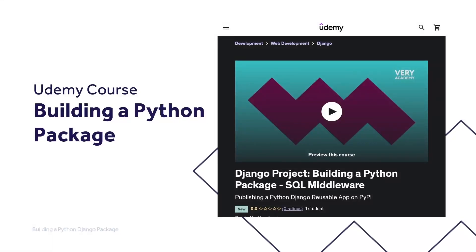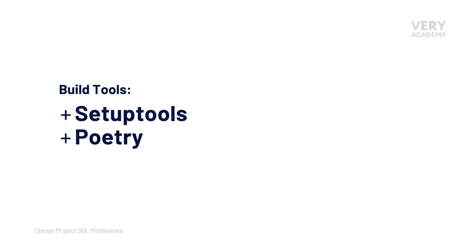This tutorial is part of our building a Python package course, where we learn how to build, test, and automate deployment of a Python Django middleware package to the Python Package Index. You can watch the entire course uninterrupted, ad-free, and access updated tutorial source code and other resources from our Udemy course. Alternatively, you can access the course via our YouTube playlist — links can be found in the video description. We're now ready to package up our package and distribute it to the Python Package Index.